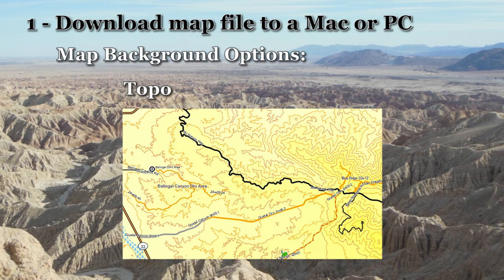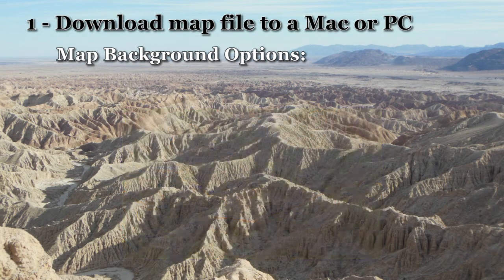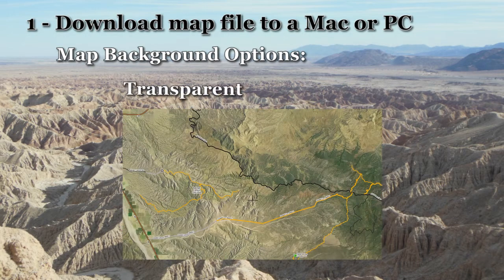The lower resolution maps are significantly smaller in file size because they omit the lowest level of topo lines. The transparent map doesn't have a background, so it can be overlaid on top of satellite imagery or another map.